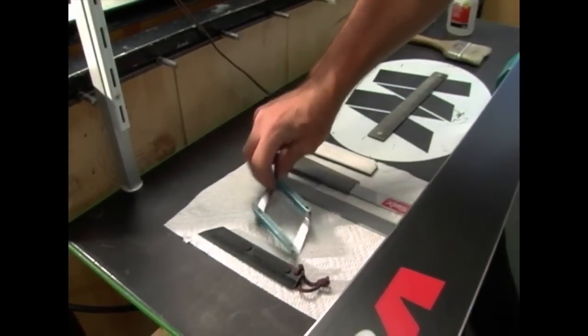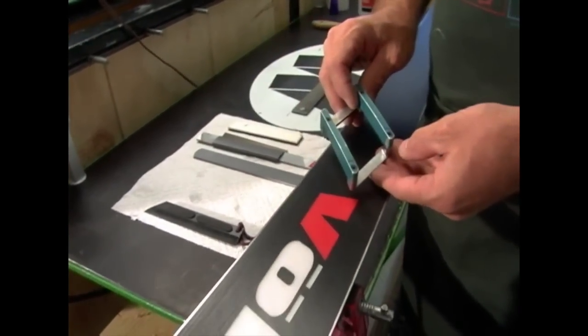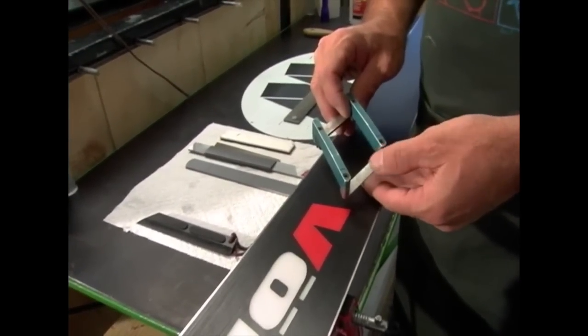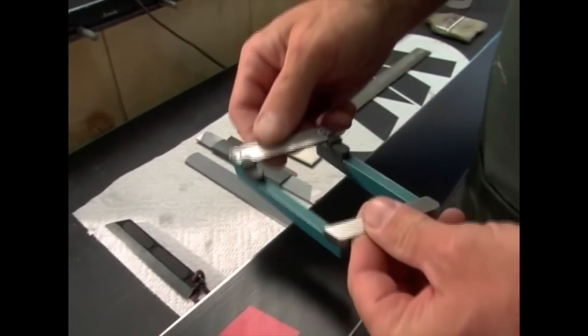I start with a base bevel guide. This guide happens to be one degree, but they come in 0.5, 0.7, 1, 1.5, and 2 degrees.